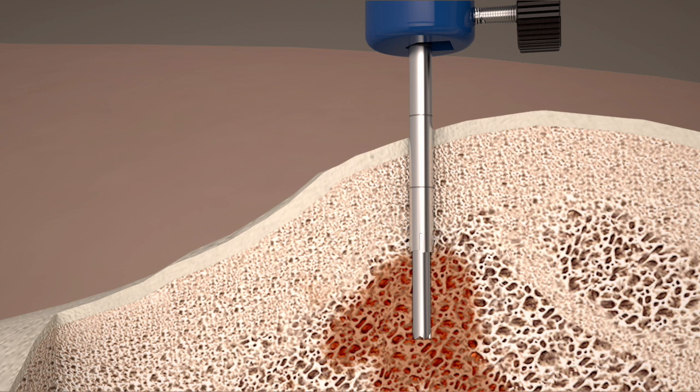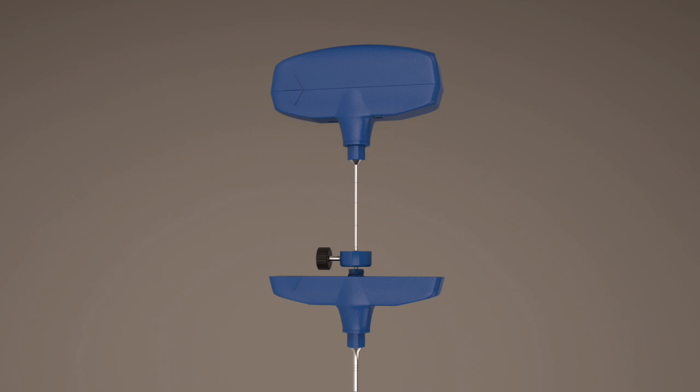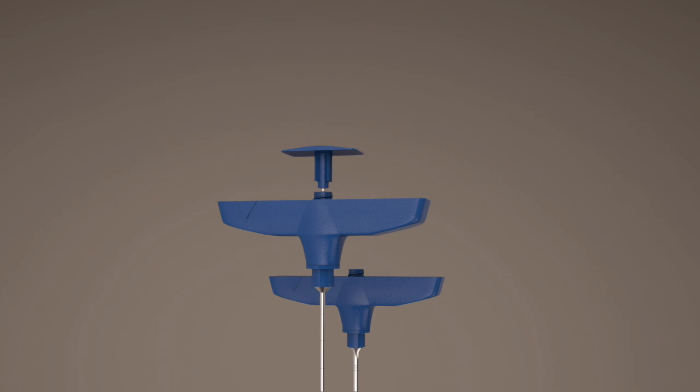The biopsy needle is then withdrawn and the handle unlocked. The ejector pin is inserted through the handle end of the biopsy needle and the specimen is gently ejected.